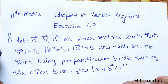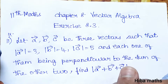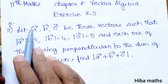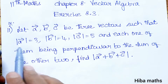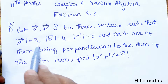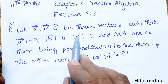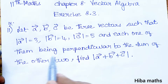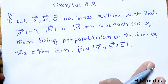Hello students, welcome to Heba Max. This is 11th standard, Chapter 8 Vector Algebra, Exercise 8.3, Question 11. Let a vector, b vector, c vector be 3 vectors such that modulus of a vector equals 3, modulus of b vector equals 4, modulus of c vector equals 5, and each one of them being perpendicular to the sum of the other two. This is very important.